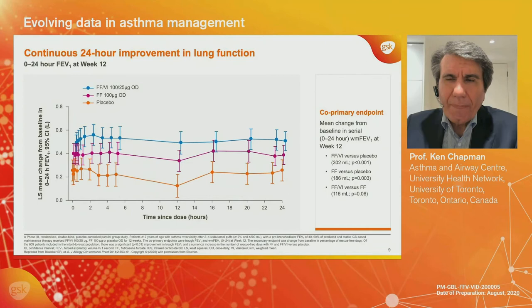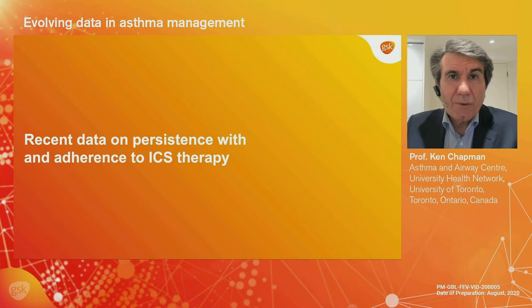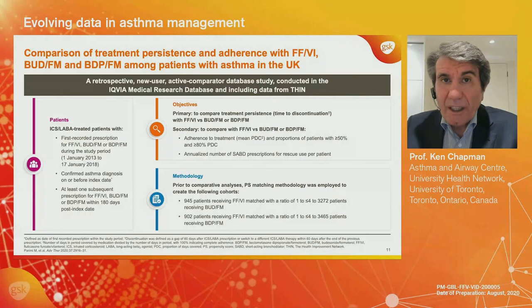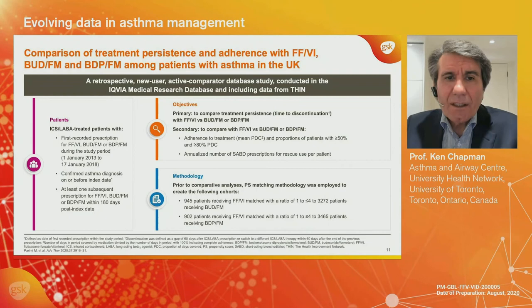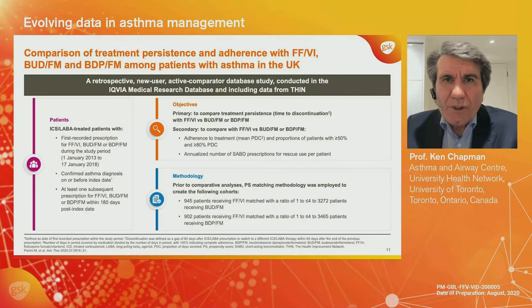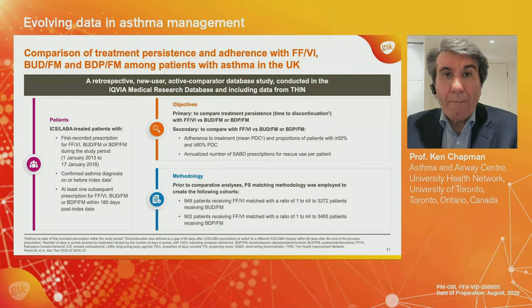What will that mean in the long term? The data comes from the UK and looks at cohorts of patients receiving various ICS-LABA prescriptions. We compare fluticasone furoate with vilanterol — the once-daily ICS-LABA combination — to patients receiving budesonide/formoterol, typically given twice daily, or beclomethasone/formoterol, again typically given twice daily. The primary outcome is persistence with the prescribed therapy over the subsequent year, and we also look at adherence. Patients were propensity score matched to compare like to like.